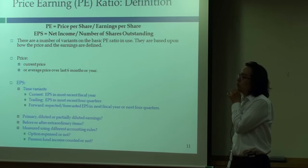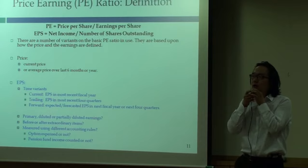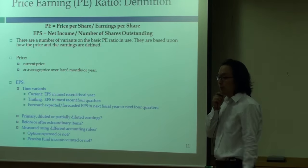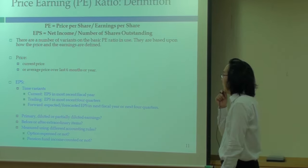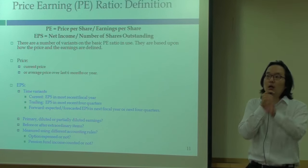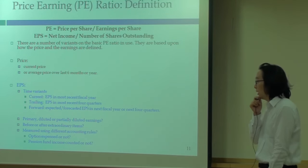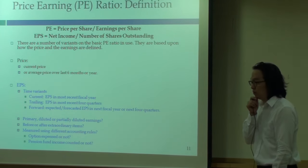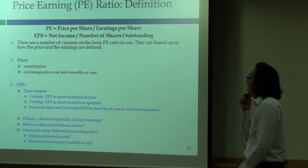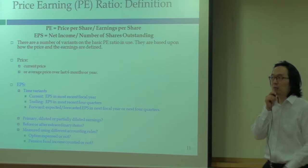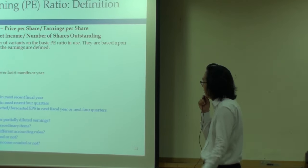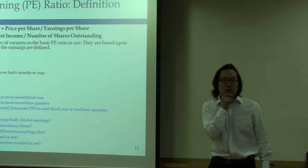Do you have to be uniformly applying these things? And then, before or after extraordinary losses or extraordinary profit, you have to be uniform. If you are working with multi-country international comparison, accounting regulation may vary, so you want to standardize those things. That's a hugely complicated process. For example, some countries may not expense the option to the CEO, some countries do. Pension fund income — should it be counted or not? You have to standardize those things.